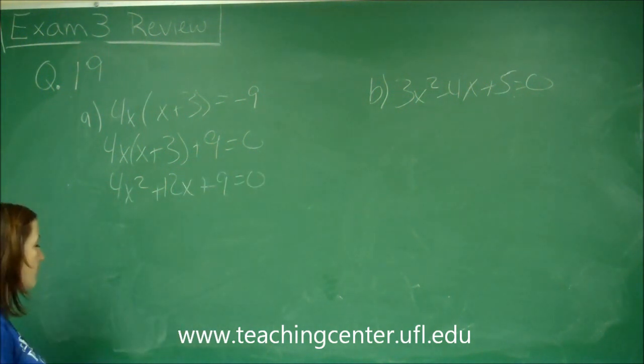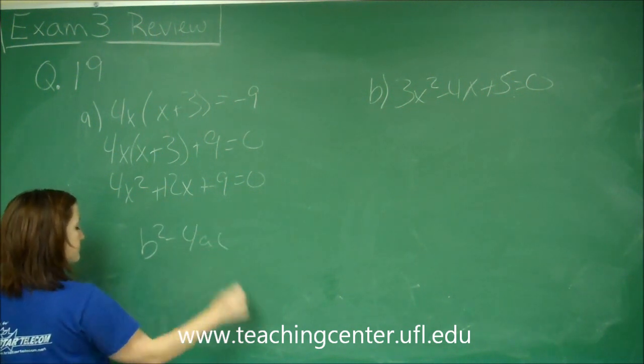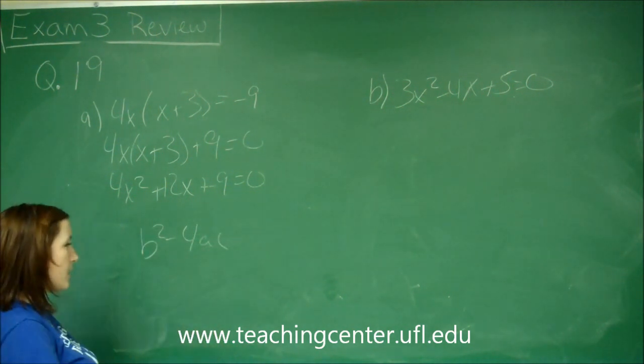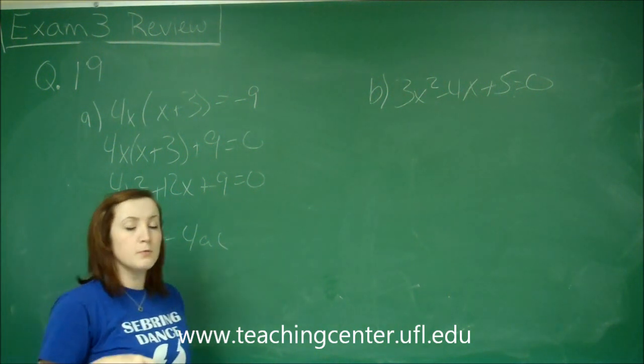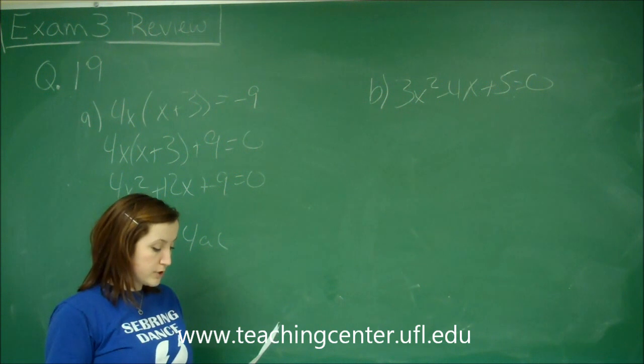Now I'm going to use my discriminant which is b squared minus 4ac. If my discriminant is positive then we are going to have two distinct solutions.